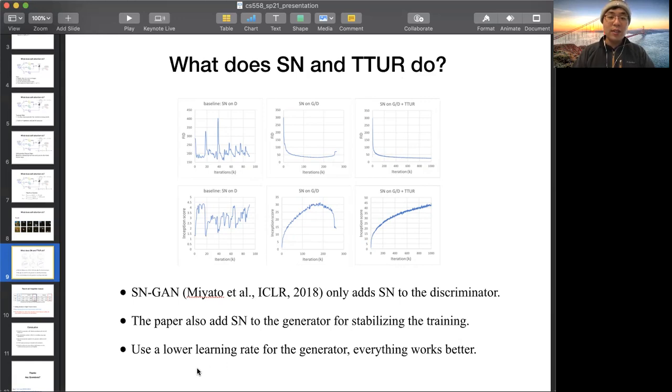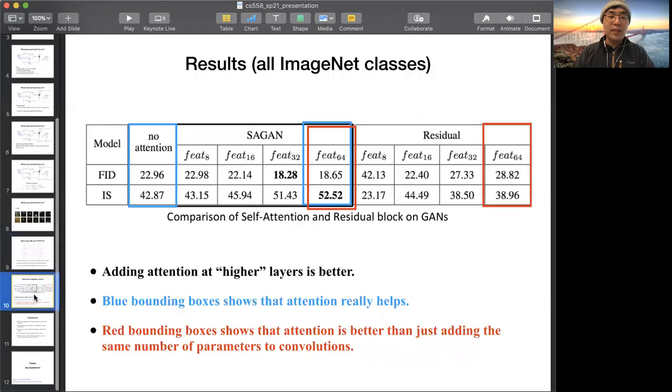In the third column, the author used different learning rate for the generator and the discriminator. In the conventional GAN, we train the generator one time and we also need to train the discriminator five times. If we use lower learning rate on the generator, we don't need to train the discriminator so many times. So this technique can speed up the training.